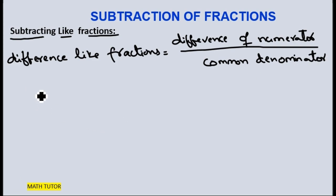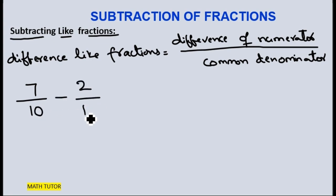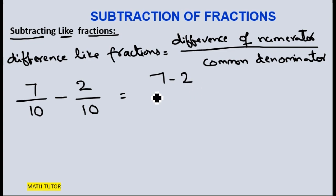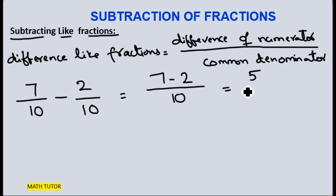Let me take two like fractions: 7 by 10 minus 2 by 10. For subtracting like fractions, we have the same denominator, and we just need to find the difference between the numerators 7 and 2, keeping the common denominator 10. So the answer is 7 minus 2, which is 5 by 10. Clear?